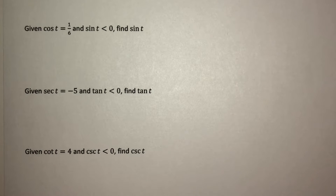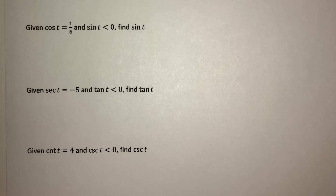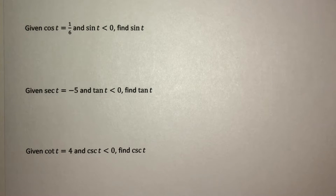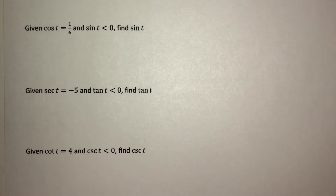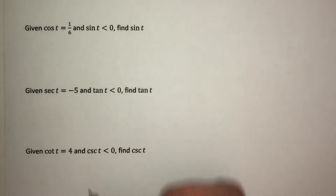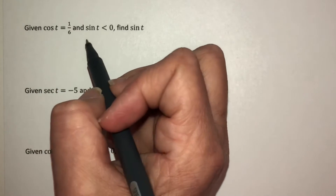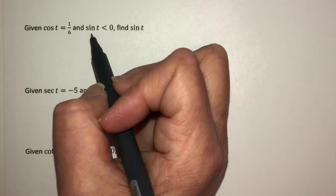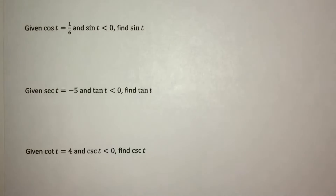This is part 7 of section 4.3. If we are given that cosine of t is equal to 1/6 and that sine of t is negative, we're going to find sine of t. We know our answer should be a negative number, which is good. We need a relationship between cosine and sine — something that lets us solve for sine given only a cosine value.